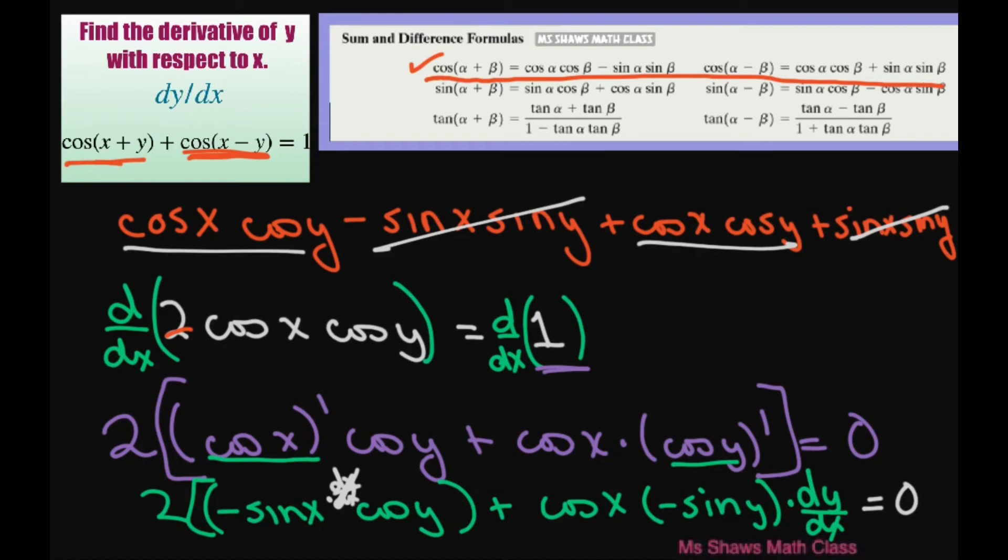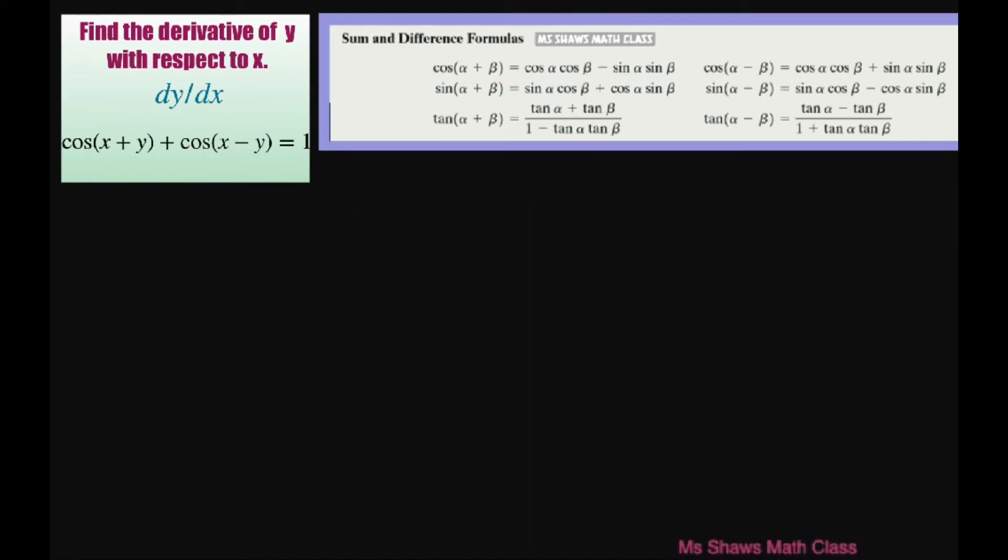So from there what we're going to do is, and I'm going to rewrite this because I kind of messed up there, but we're going to simplify, and we're going to have 2, and then we have negative sine of x times cosine of y plus cosine of x times negative sine of y. This is times dy divided by dx equals 0. I'll put this in brackets here. Alright, from here what we're going to do is solve for dy dx.